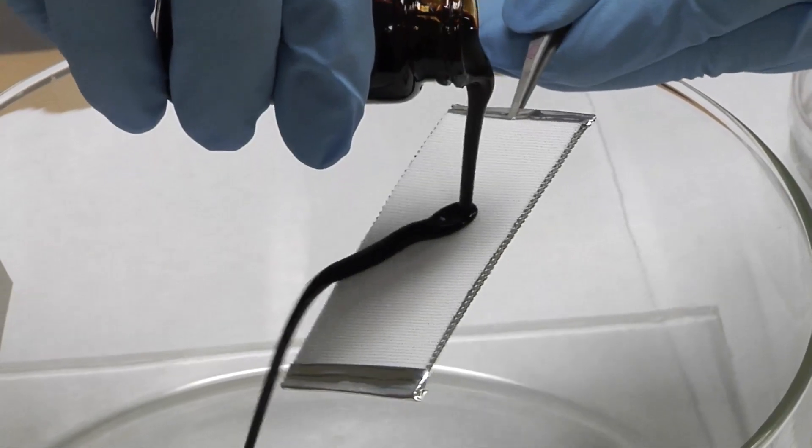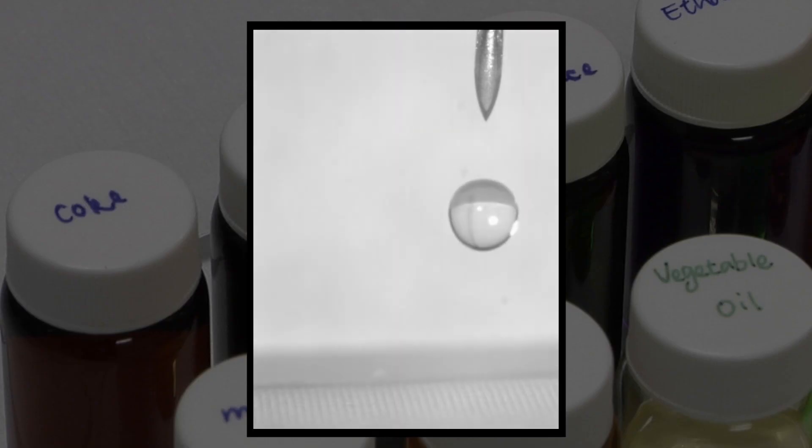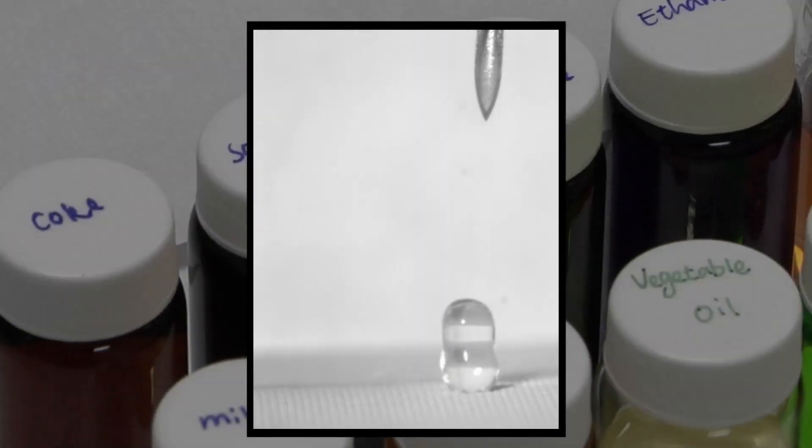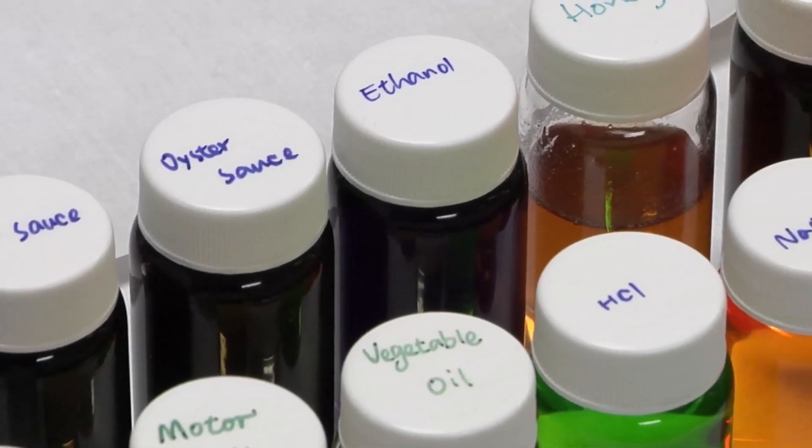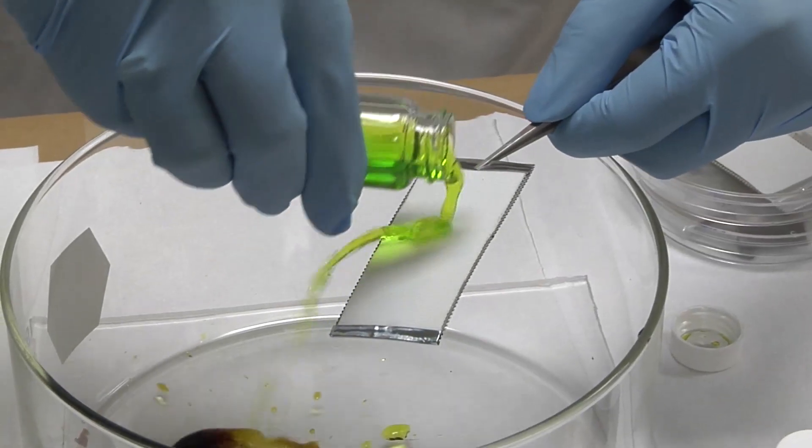Liquids tend to bead up. They don't want to spread. High-speed video reveals the coating's super repellent surface up close. Researchers have tested over 100 liquids. Even toxic acids can't penetrate it.